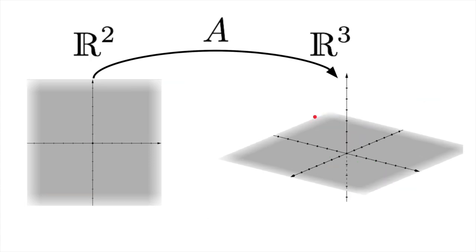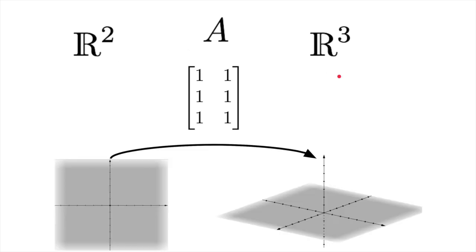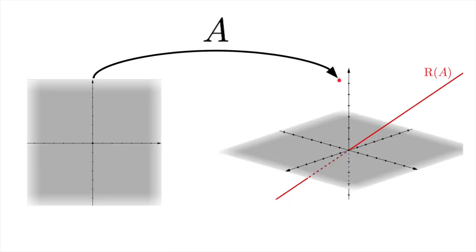To make things more concrete, we're going to consider a linear transformation A that acts as a map between R2 and R3. Because it's a mapping between 2 and 3 dimensions, it can be represented as a 3x2 matrix, like this. Let's further say that the columns of this matrix are linearly dependent, so that the range of A, or the column space of the matrix, is a line in R3.